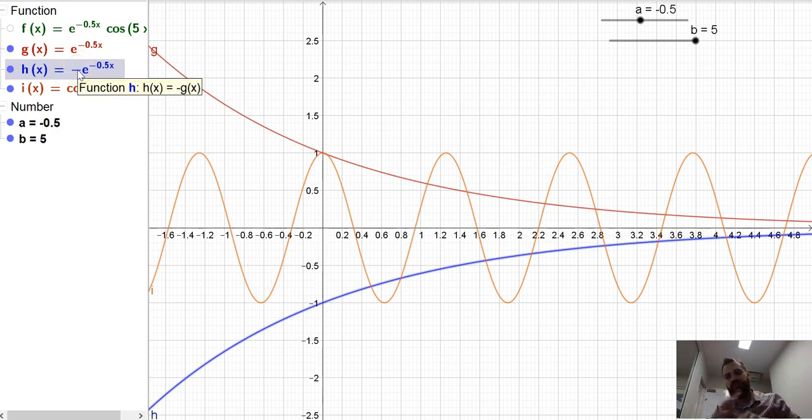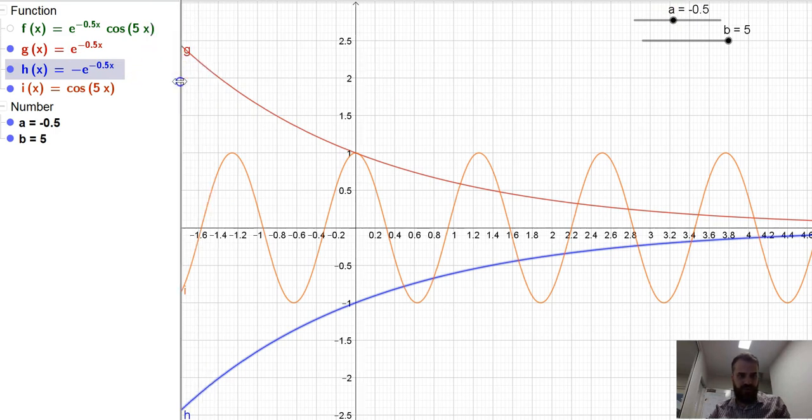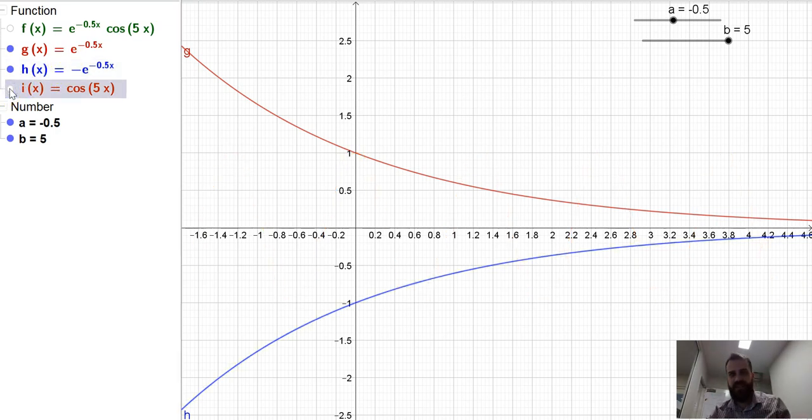Now, here's where the magic of the damped function happens. I take e to the negative ax, or e to the ax if it's negative 0.5, and I attach it to the front of my cos 5x. So now I've got f(x) equals e to the negative ax cos 5x. Let's get rid of our periodic function so we can see what happens really nice and neatly here.